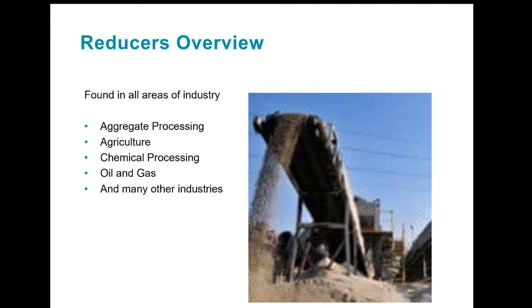Gearboxes are found in all industries — aggregate processing, agriculture, chemical processing, oil and gas, transmission, distribution systems, logistics, warehouses, and storage, just to name a few. Gear reducers are also commonly found in areas where higher torque and/or lower rotational speed is needed, or if power needs to be transmitted at an alternative angle, such as at a right angle to the motor. It's also possible to change the rotational direction, going from clockwise to counterclockwise.